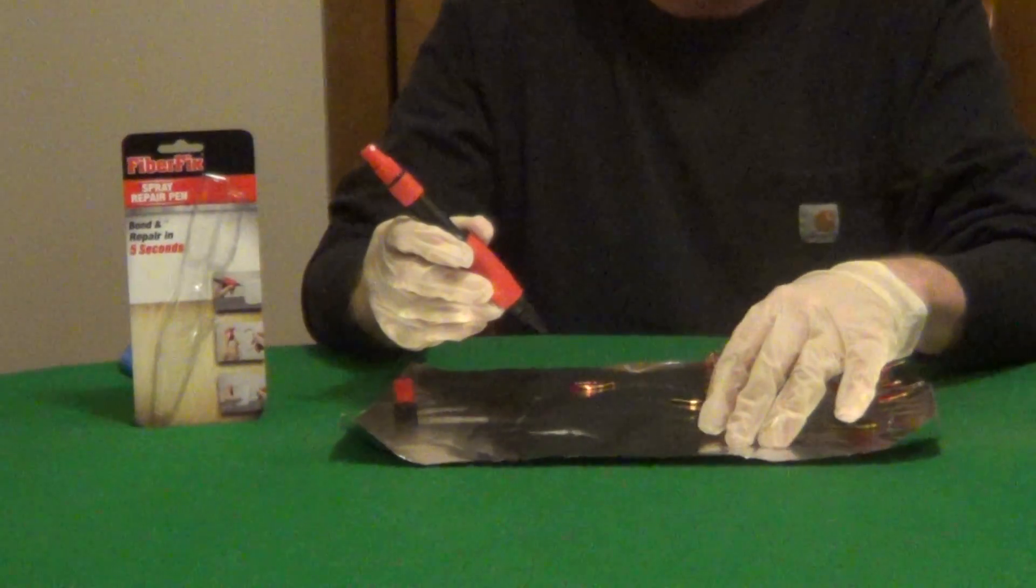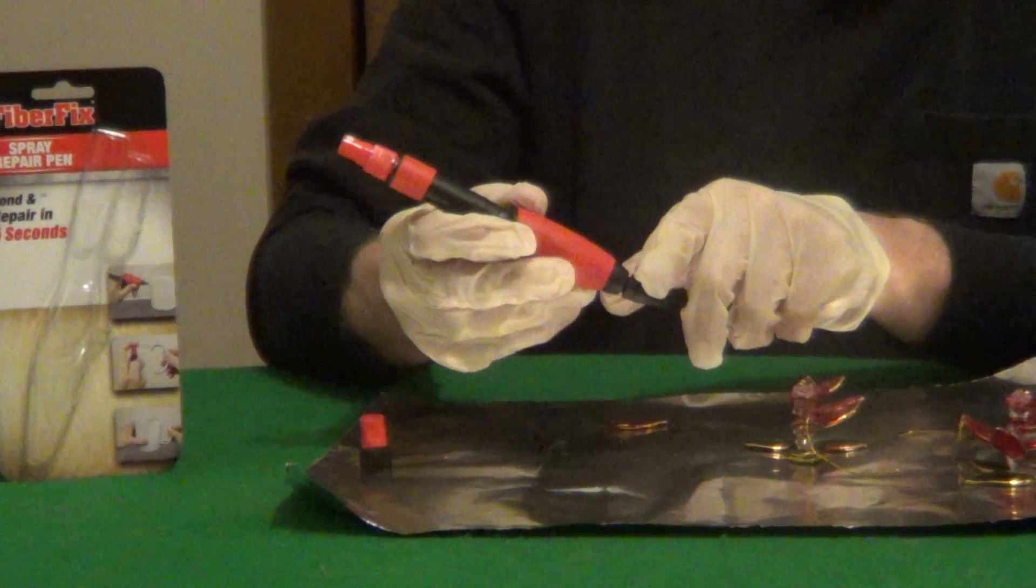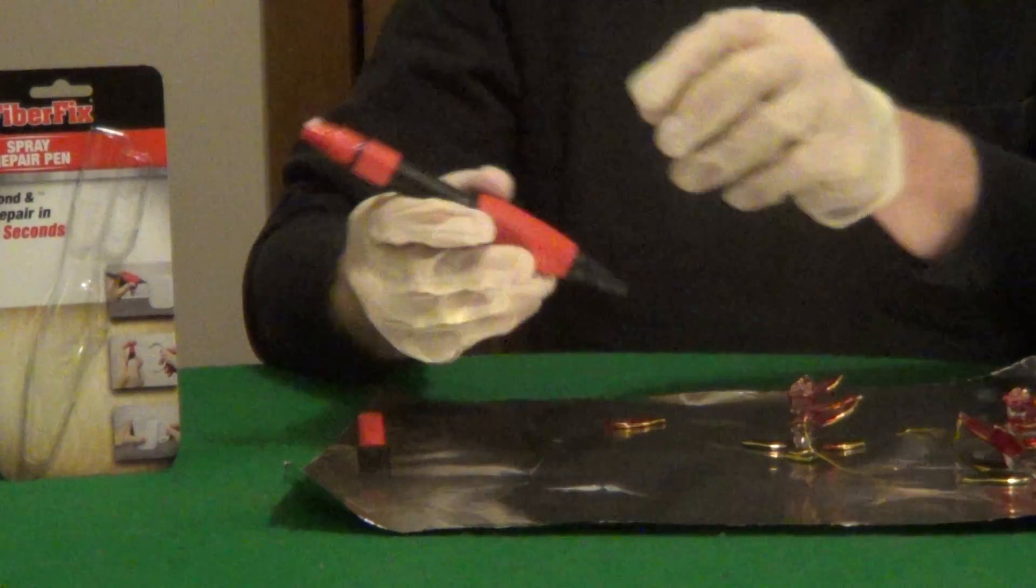I like working on aluminum foil, it's easy to clean up and also wearing disposable gloves. This has an adhesive on one side and then a spray activator on the other side.